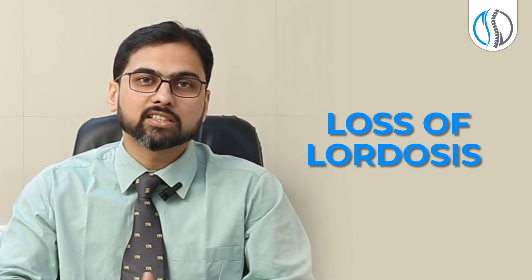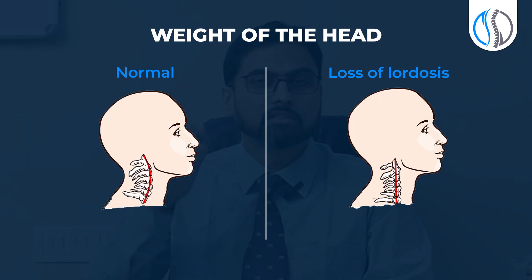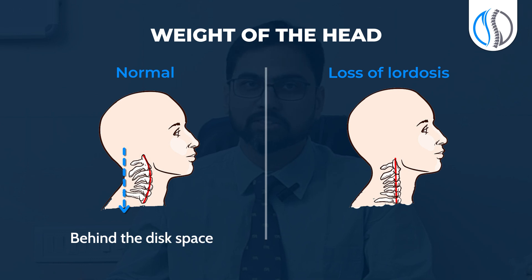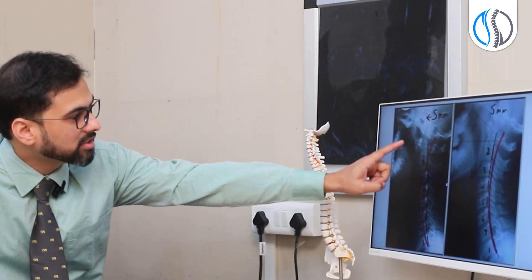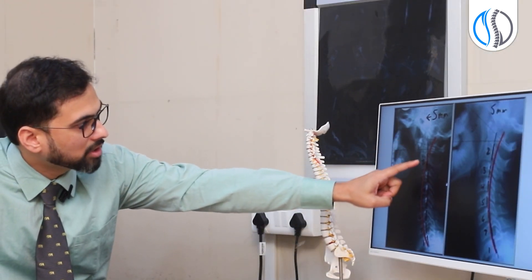When this curvature straightens, the weight of our head which was previously being transmitted just behind our disc spaces gradually shifts in front. The center of gravity now falls straight through our vertebral bodies and the discs in between them. Over a prolonged period of time, this compresses the disc spaces between the two bones.